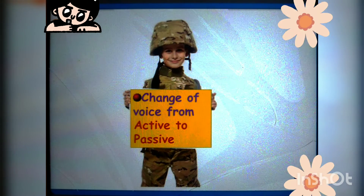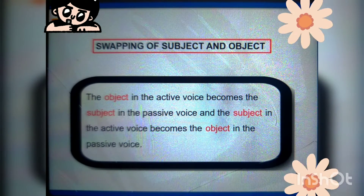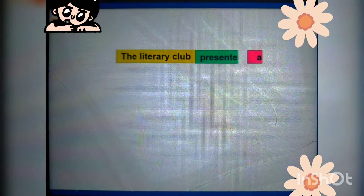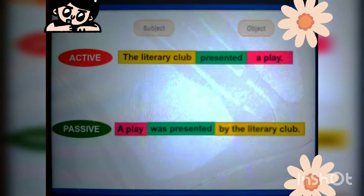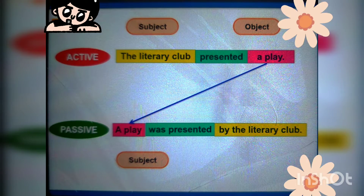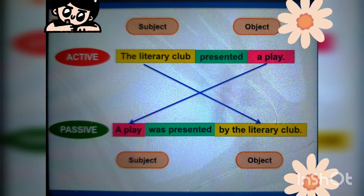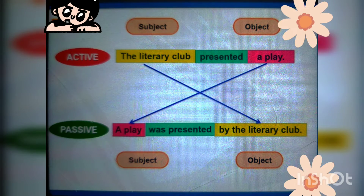Change of voice from active to passive involves swapping of subject and object. The object in the active voice becomes the subject in the passive voice, and the subject in the active voice becomes the object in the passive voice. For example: 'The literary club presented a play' becomes 'A play was presented by the literary club.' The object of the sentence becomes the subject — see how the interchange happens.